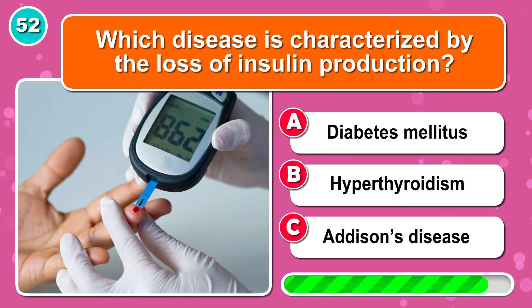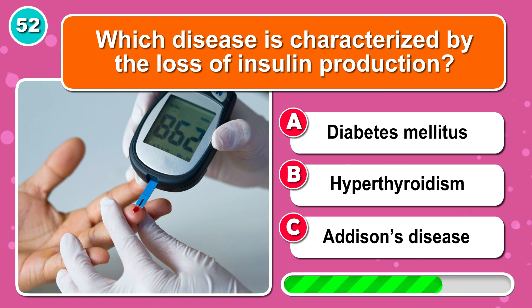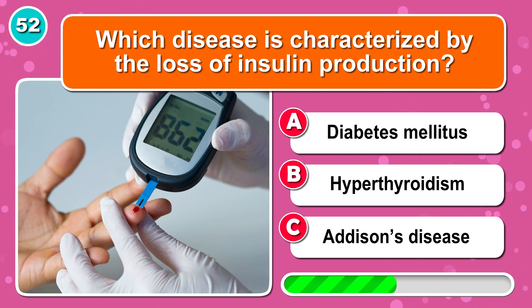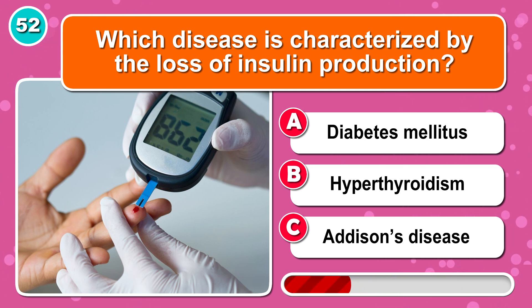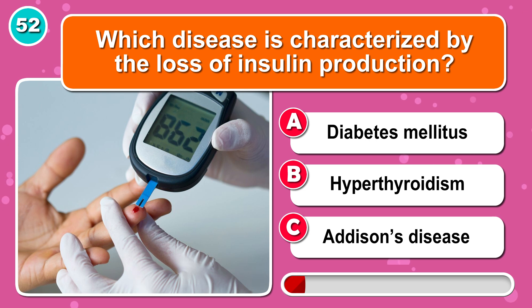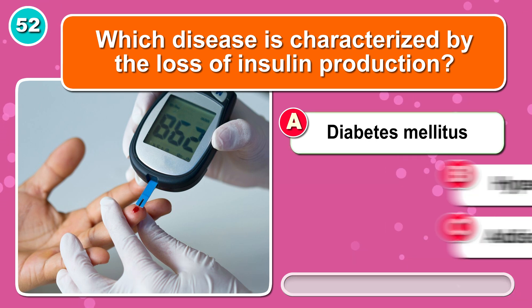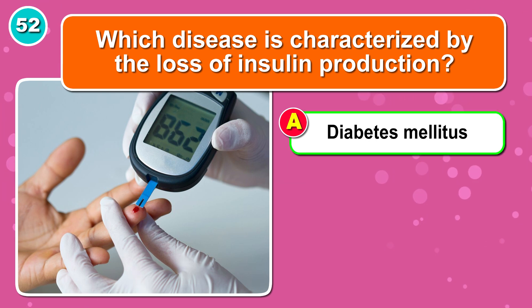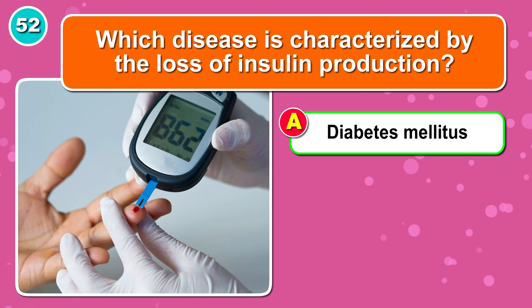Which disease is characterized by the loss of insulin production? Correct, A: diabetes mellitus.